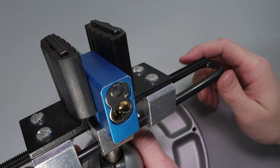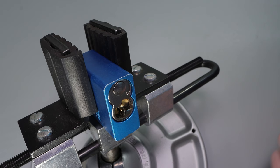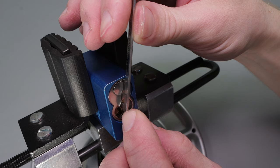Now let's try to open this up right now. I'm going to use the standard hook from the set with the 1.3 millimeter standard top of the keyway tensioner. We're going to pick it open right now.